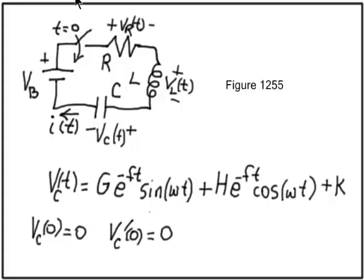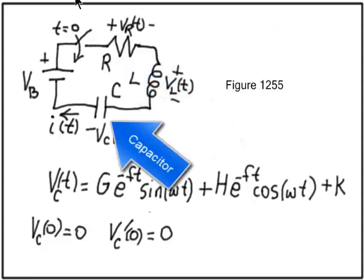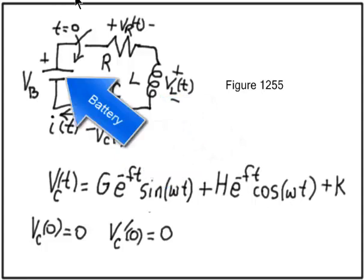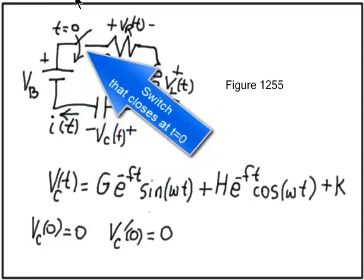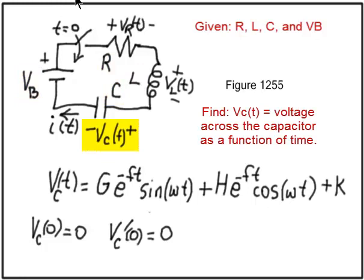Here's an electrical circuit with a resistor, inductor, capacitor, and battery, and a switch that closes at T equals zero. Given values of R, L, C, and the battery voltage, find the voltage across the capacitor as a function of time.